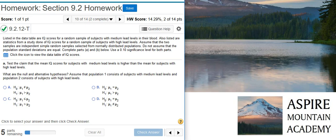Here's our problem statement. Listed in the data table are IQ scores for a random sample of subjects with medium lead levels in their blood. Also listed are statistics from a study done of IQ scores for a random sample of subjects with high lead levels. Assume that the two samples are independent, simple random samples selected from normally distributed populations. Do not assume that the population standard deviations are equal. Complete parts A and B below. Use a 10% significance level for both parts.